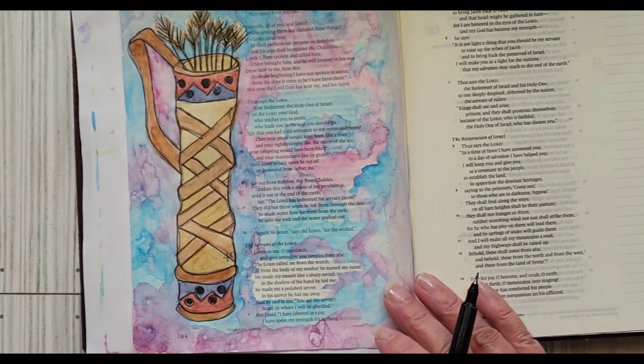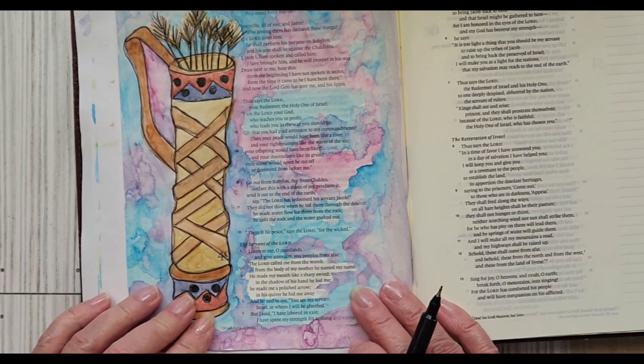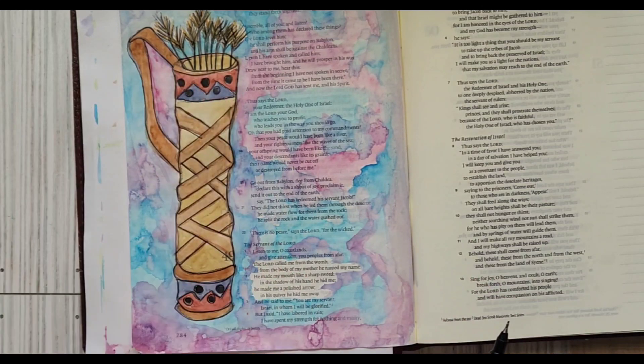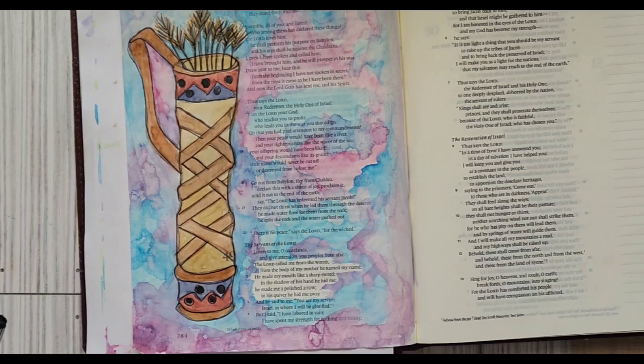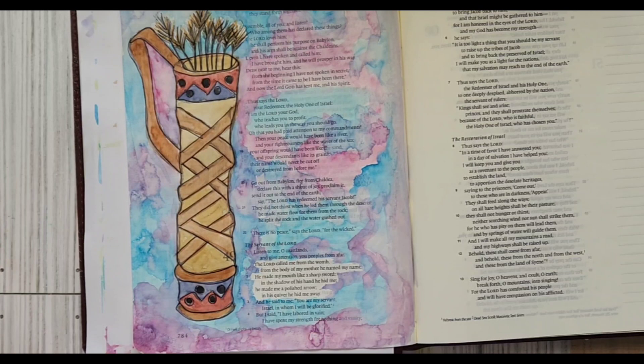It says 'The Lord called me from the womb, from the body of my mother he named my name. He made my mouth like a sharp sword, in the shadow of his hand he hid me. He made a polished arrow, in his quiver he hid me away.' That is the image for that passage in Isaiah which would be 49:2. Thanks for watching. Like and subscribe, I would greatly appreciate it. Leave me a comment. Have an amazing day, bye for now.